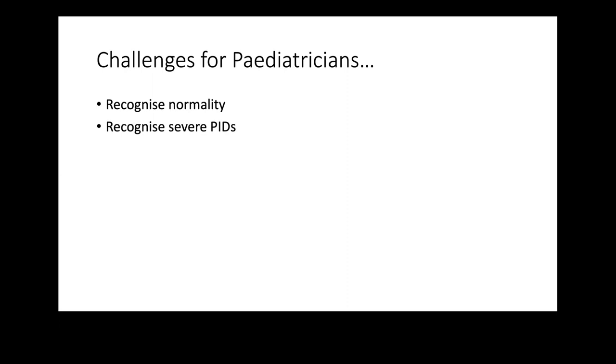Most of these conditions need a timely diagnosis. One good example is severe combined immune deficiency — if you do not diagnose it and start working on a bone marrow transplant within three to six months, you will not be able to save the patient. There are two main challenges for a general pediatrician: how to recognize abnormality when children come with recurrent infections, and how to recognize severe primary immune deficiencies so they can be referred to appropriate institutions.